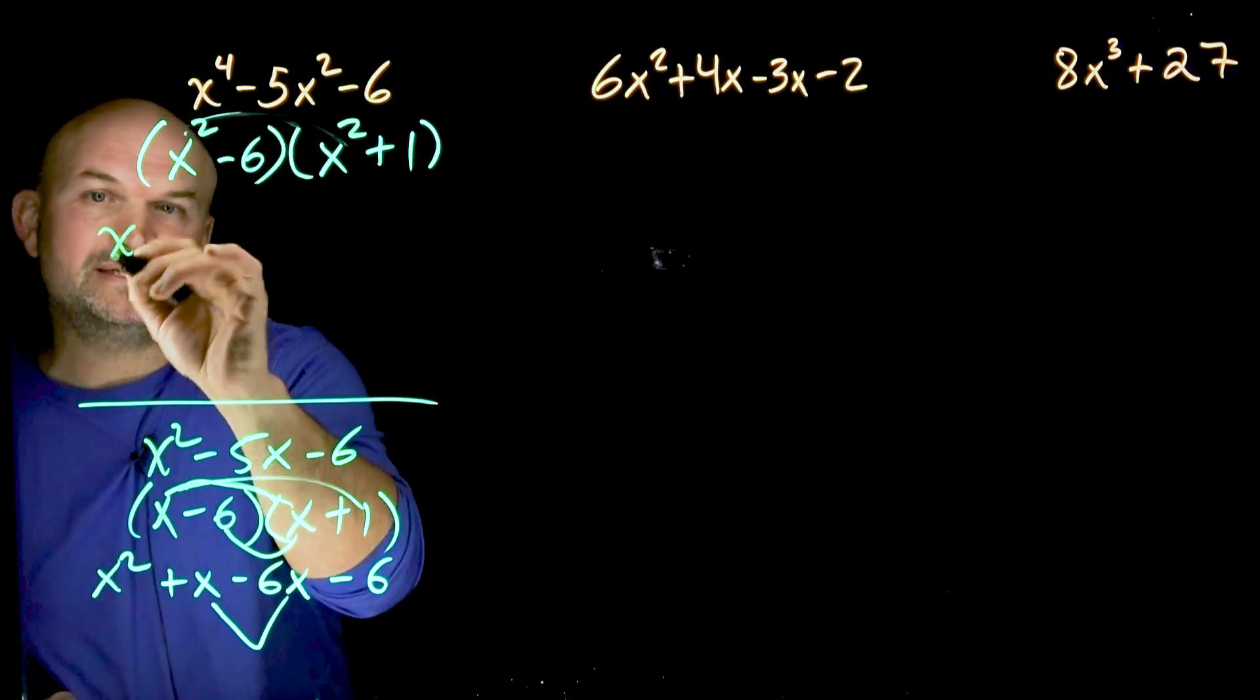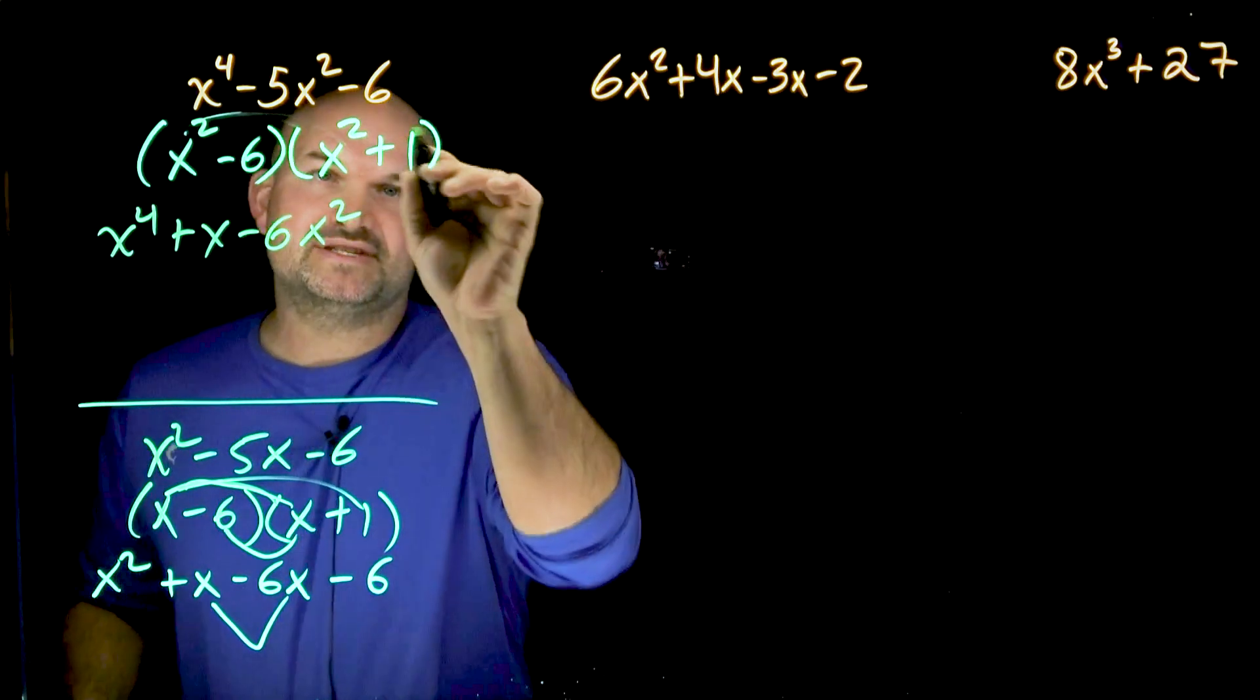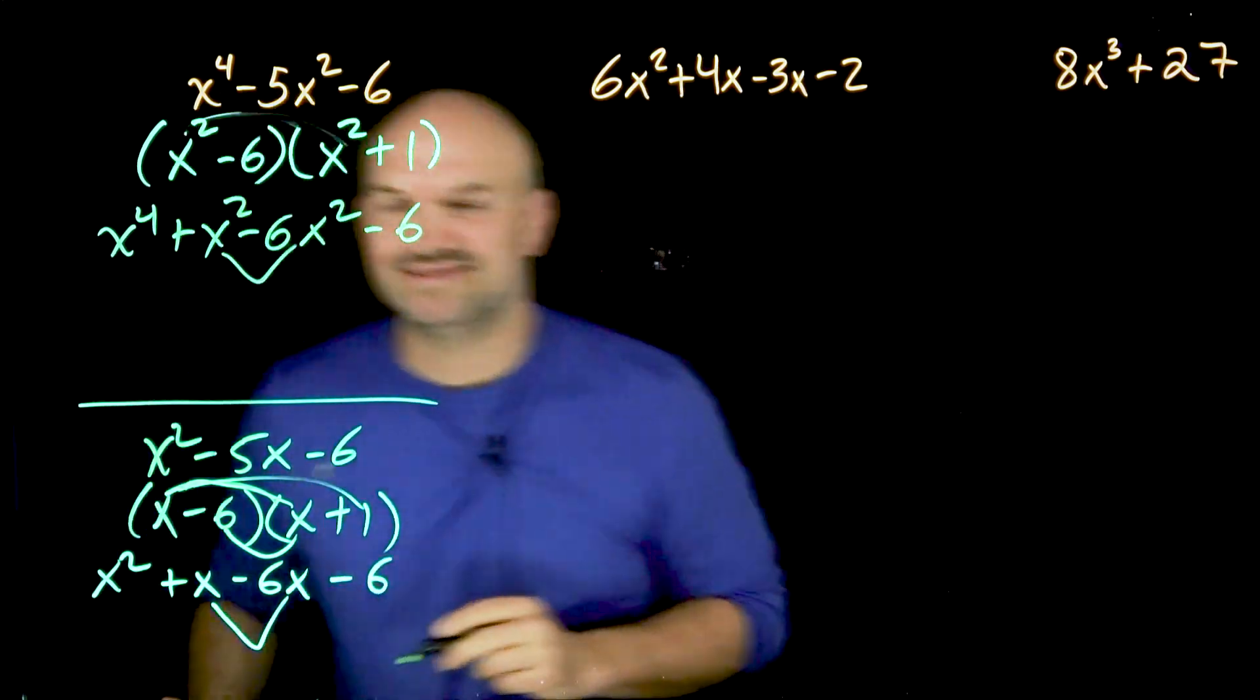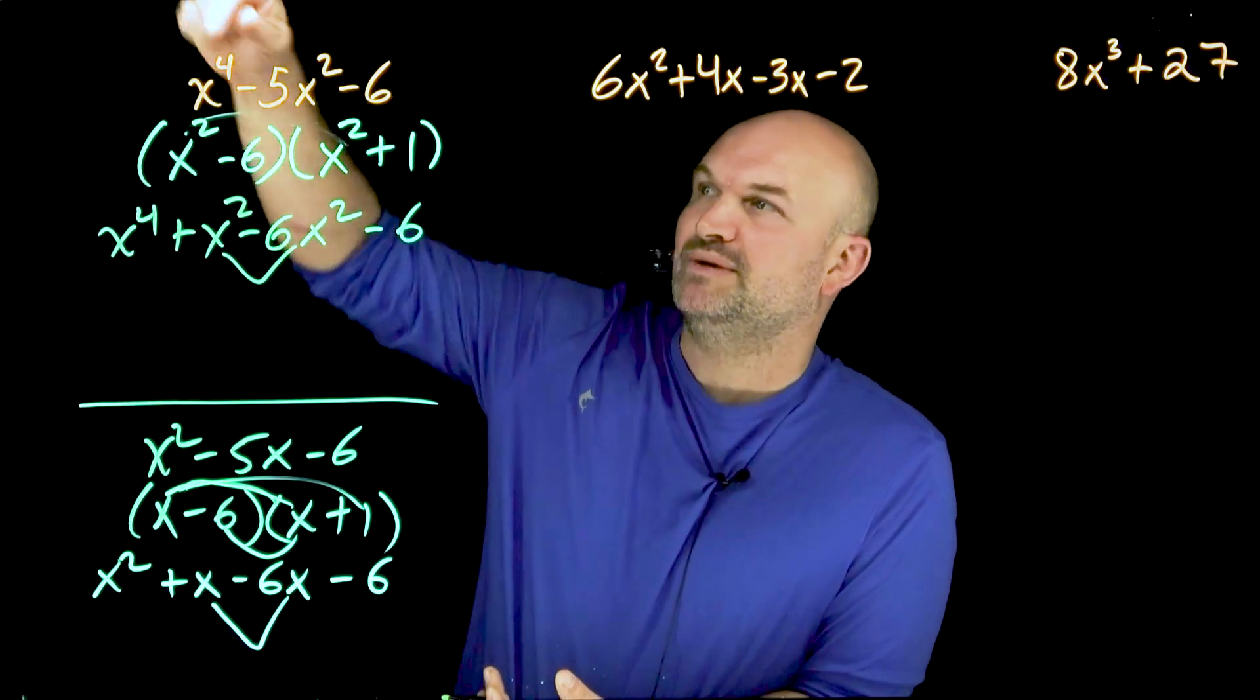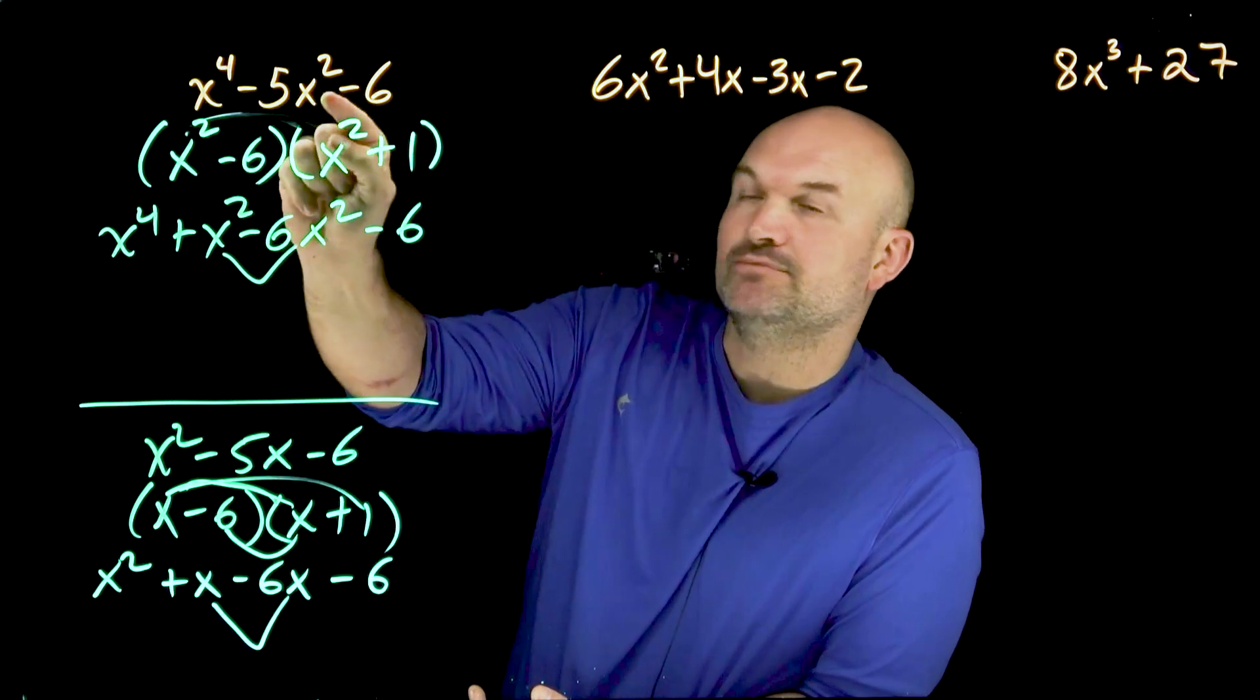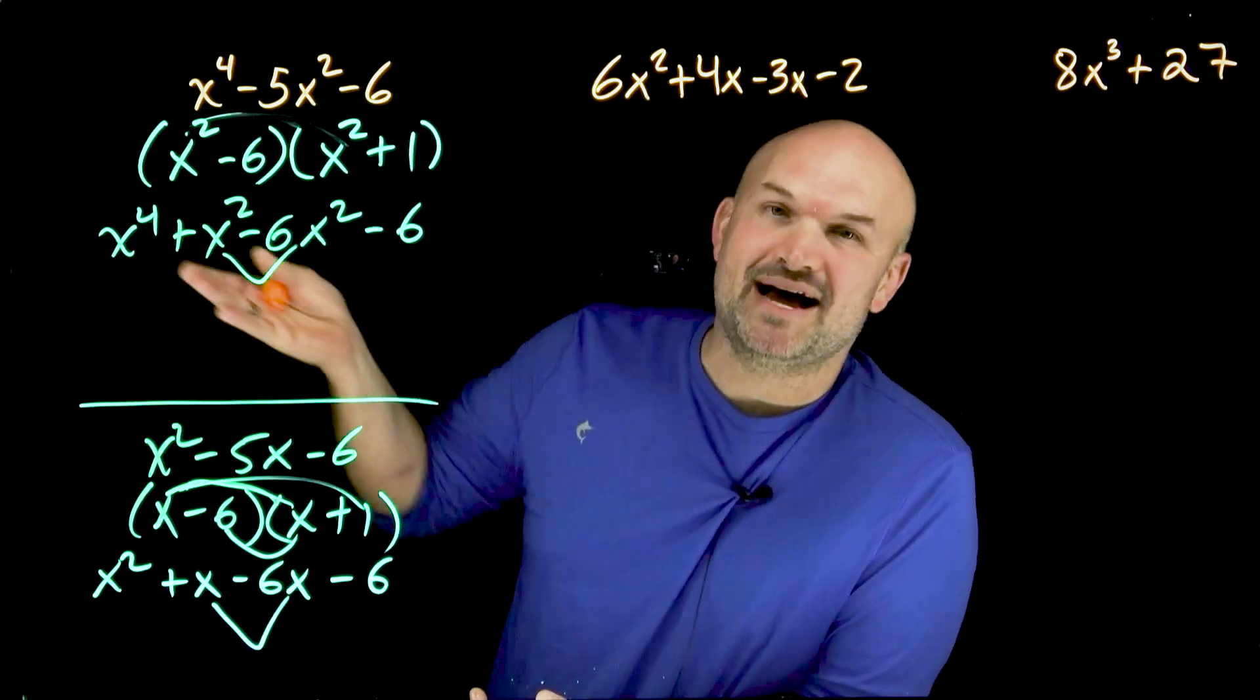Now let's multiply this back out. x squared times x squared is x to the fourth. x squared times positive one is going to be an x squared. Negative six times x squared is going to be a negative six x squared. And negative six times one is going to be a negative six. You can see these are going to combine to give you back my original middle term. So when you're factoring something like this, when you see it as a trinomial, all you simply want to do is factor it just like how you know how to do as a product of two binomials, but then raise your powers to be able to match your middle term as well as to make sure that they're going to multiply to give you that first term. Obviously, if that is not possible, then this factor technique would not work in that case.